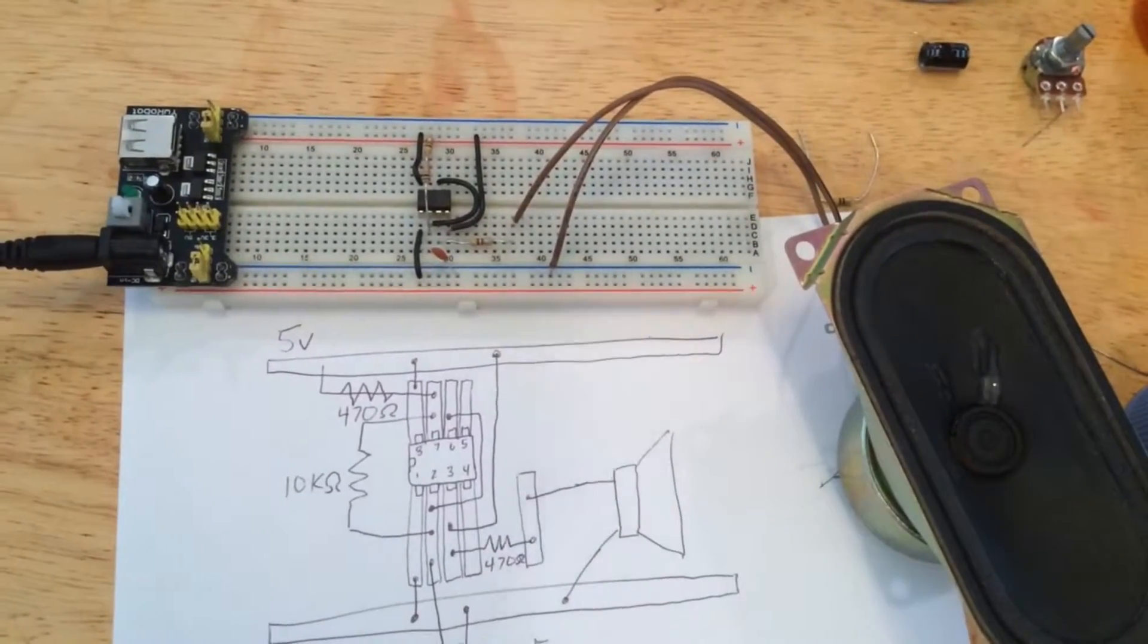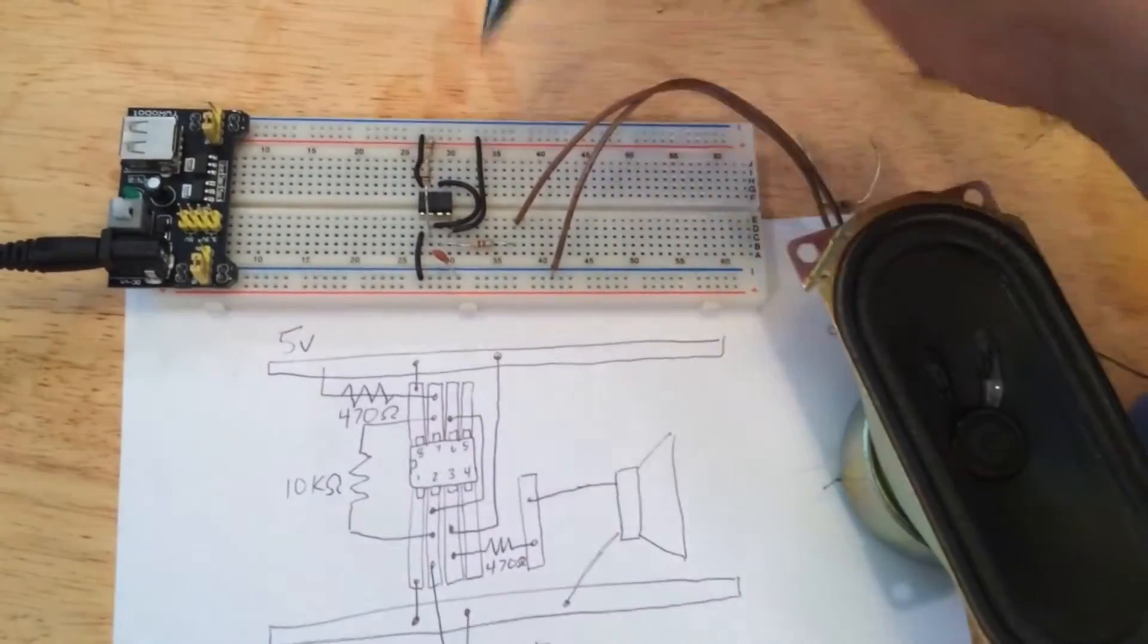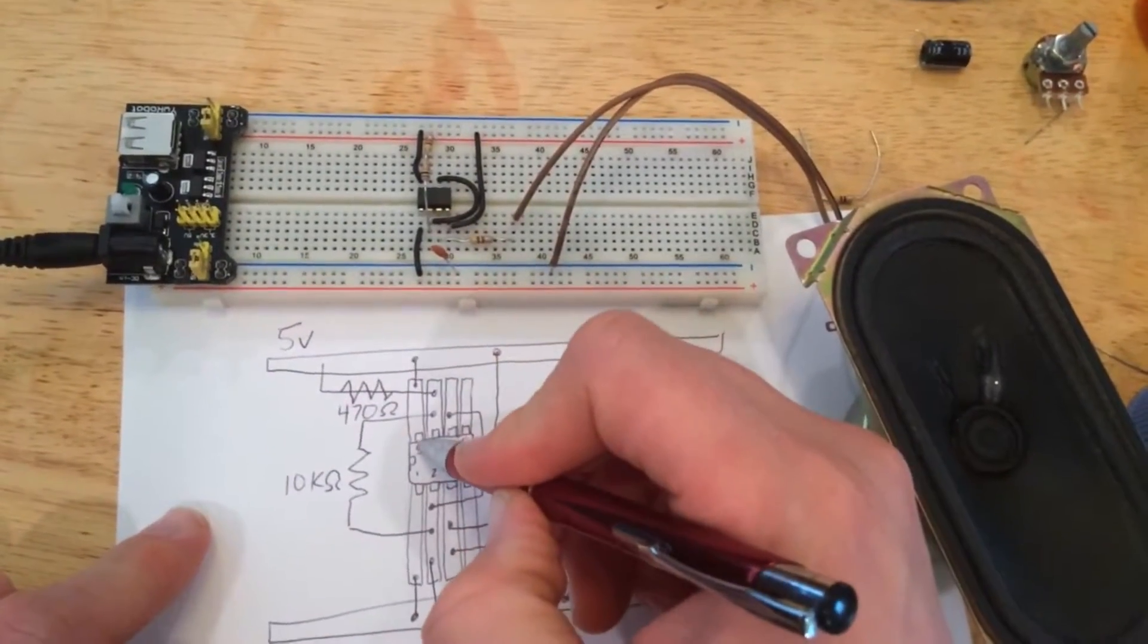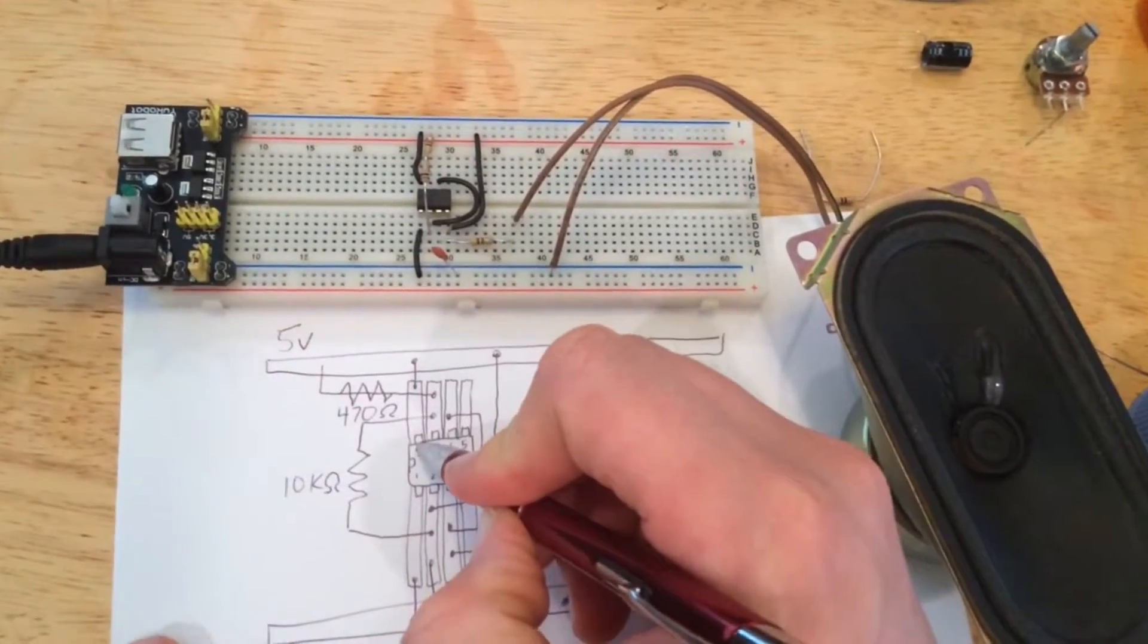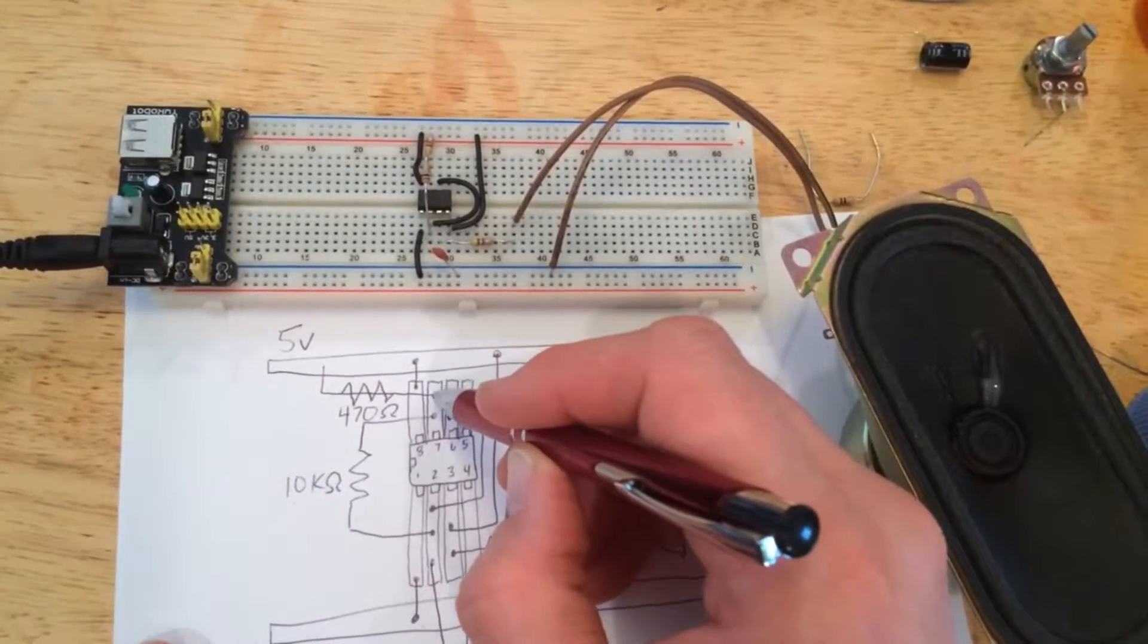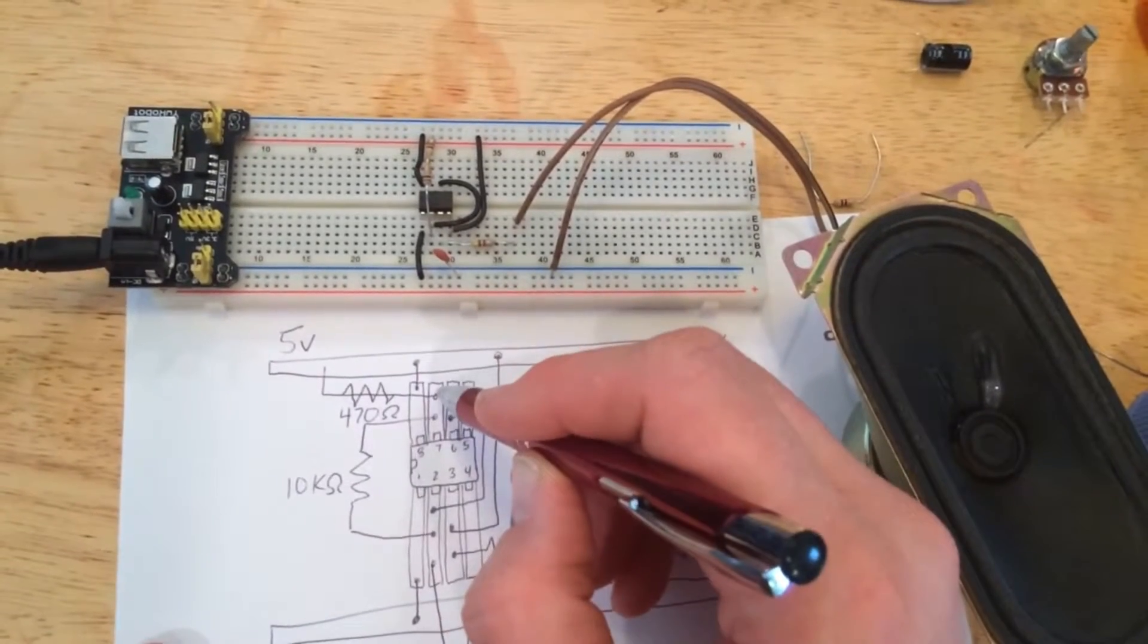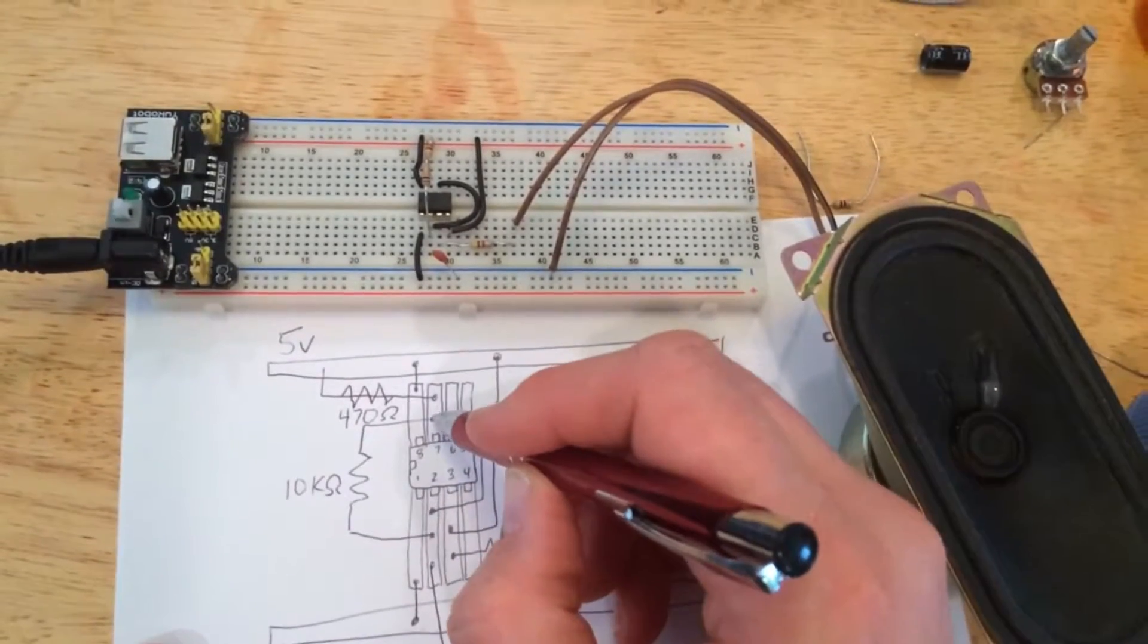So, the schematic I found: pin one is on the bottom, goes to ground. Pin eight is where your power comes from. I've got this set to five volts. One of the 470 ohm resistors goes from the power supply to pin 7. Then you want to connect pin 7 to pin 4 with your 10k resistor.